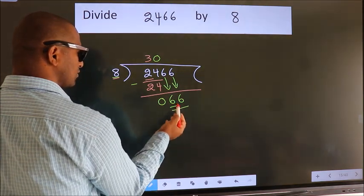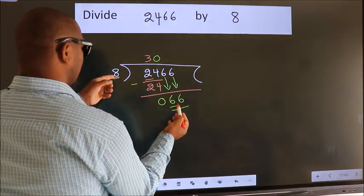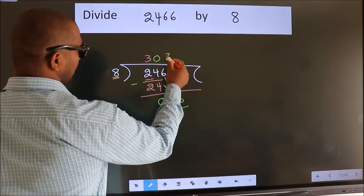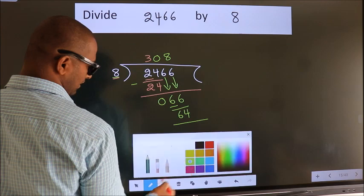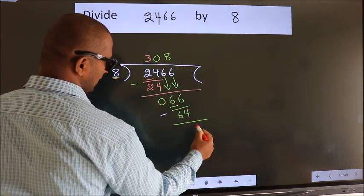A number close to 66 in the 8 table is 8 times 8, which is 64. Now we subtract. We get 2.